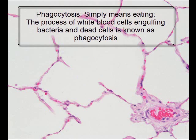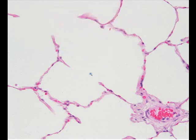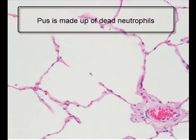This will also result in inadequate ventilation because the alveoli have no room for air. Such fluid within the alveoli is composed of dead or alive neutrophils, macrophages, blood, and fibrin, and is known as exudate.